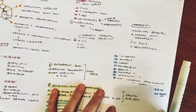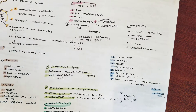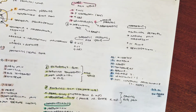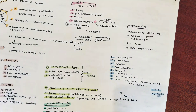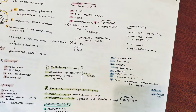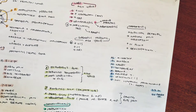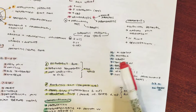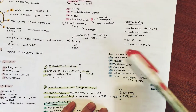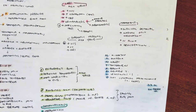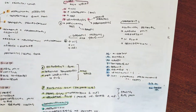There is a useful scoring system known as MANTRELS, which helps determine whether a patient has appendicitis. The acronym stands for: M — migration of periumbilical pain to the right lower quadrant; A — anorexia, meaning decreased appetite; N — nausea.